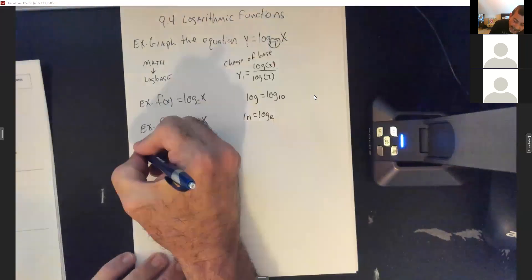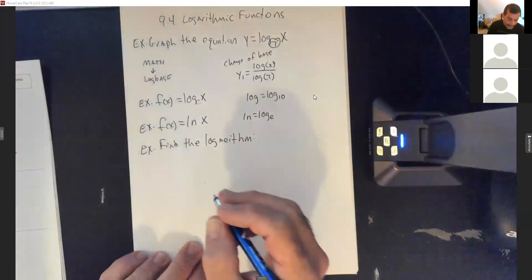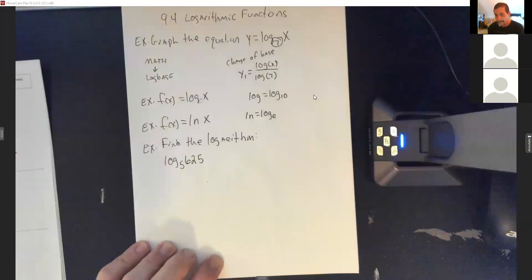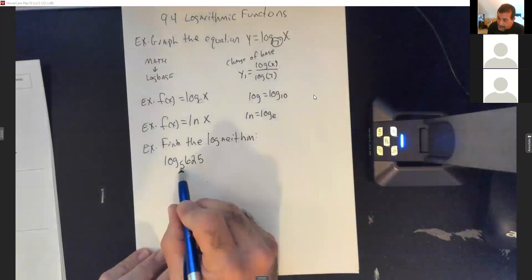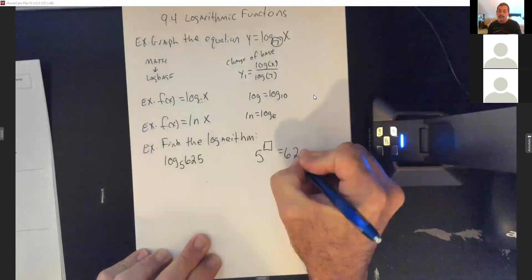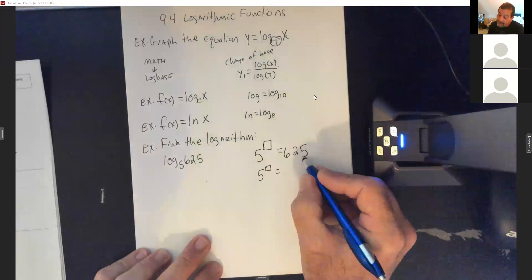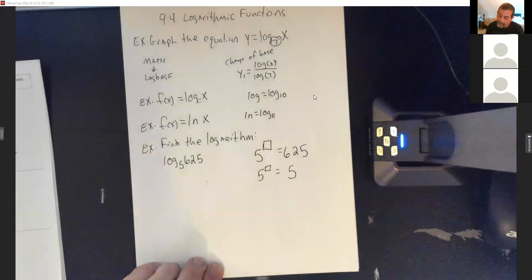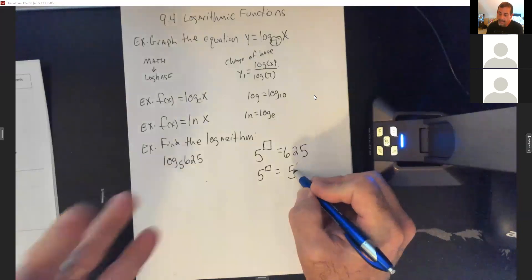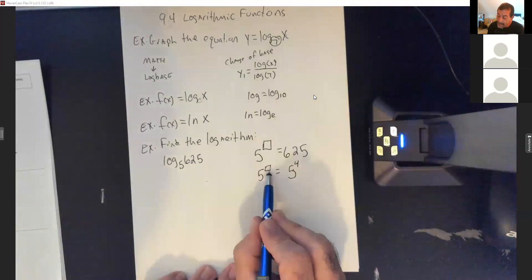Now we're going to find logarithms. The first one is log base 5 of 625. This is really looking for the exponent that 5 was raised to to make 625. So we need 5 to some exponent equals 625. Let's figure it out: 5×5 = 25, ×5 = 125, ×5 = 625 — that's four times, so 5 to the 4th. The exponent has to equal 4.